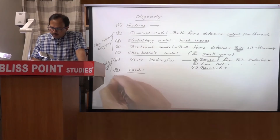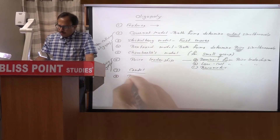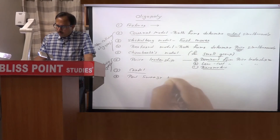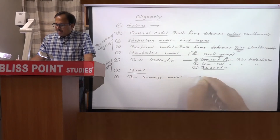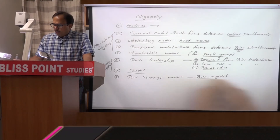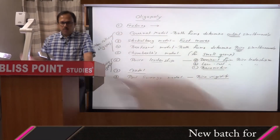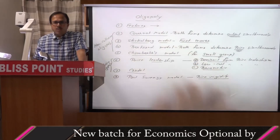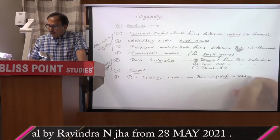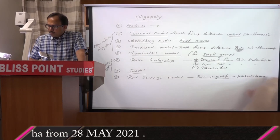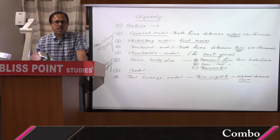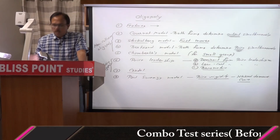Another main topic is the Paul Sweezy model. This model explains price rigidity, which is an important feature of oligopoly. Price rigidity will be explained through the kinked demand curve. So whether Paul Sweezy model is mentioned directly, or kinked demand curve hypothesis, or price rigidity — you have to explain this Paul Sweezy model.